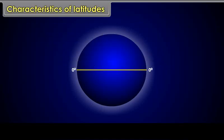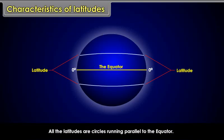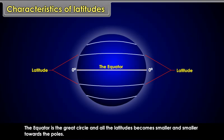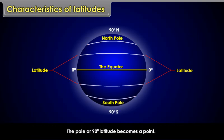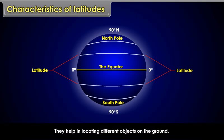Characteristics of Latitudes: All the latitudes are circles running parallel to the equator. The equator is the great circle and all the latitudes become smaller and smaller towards the poles. The pole or 90 degree latitude becomes a point. They run in east-west direction. They help in locating different objects on the ground and help in understanding the climate of a place.